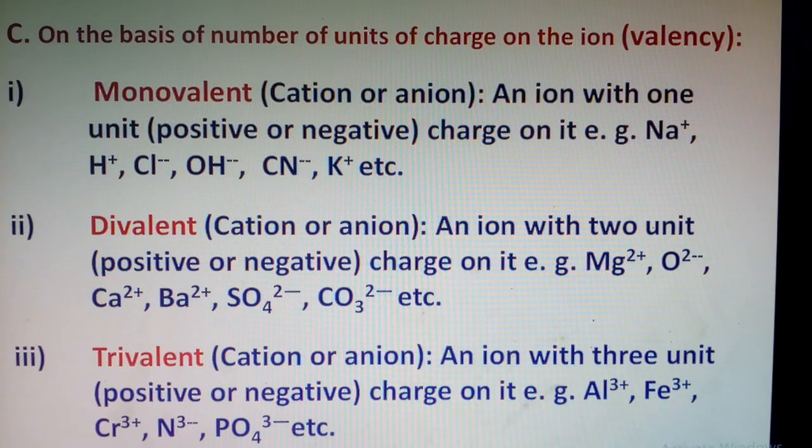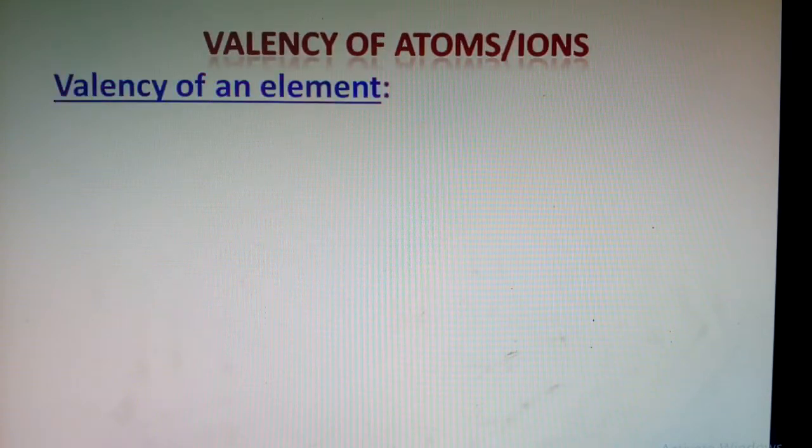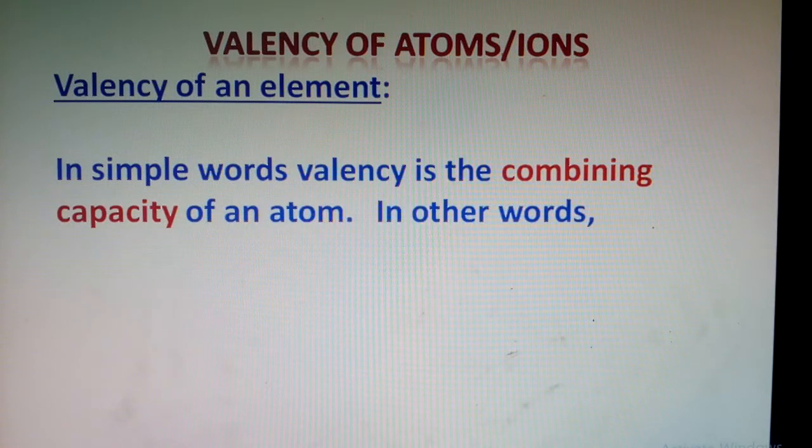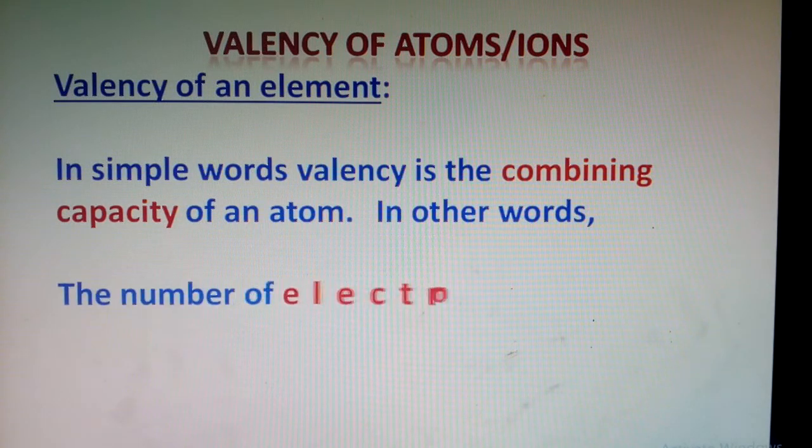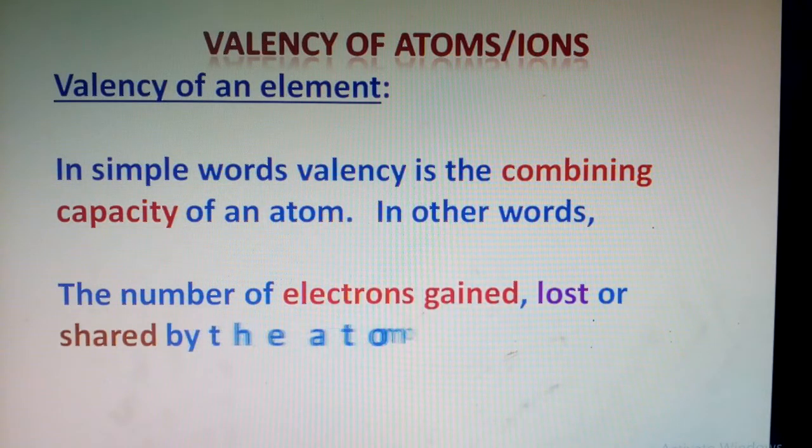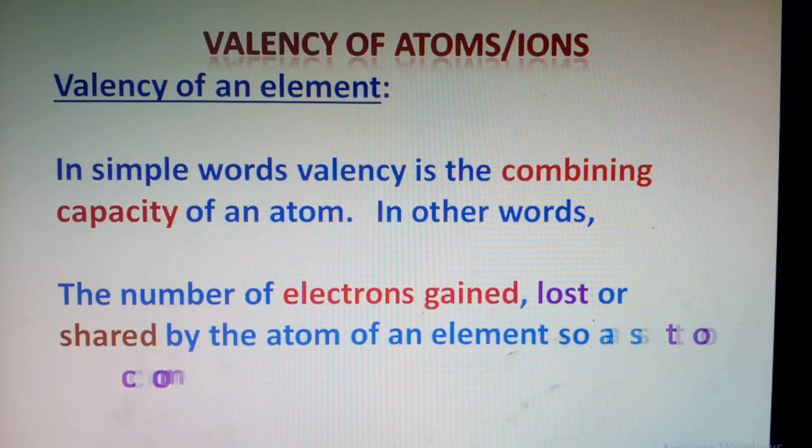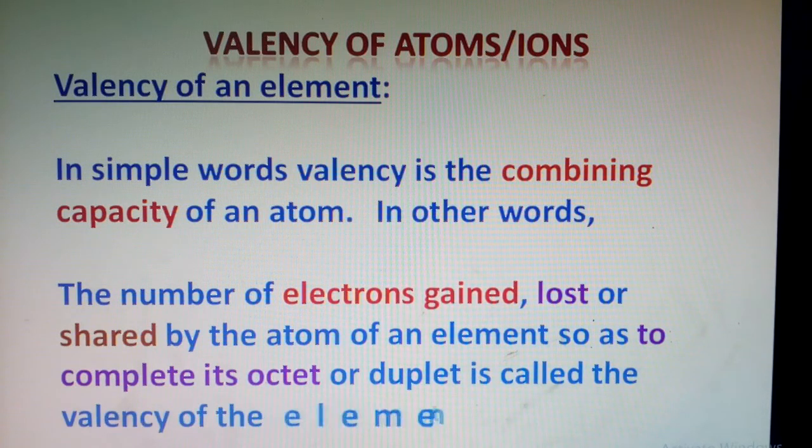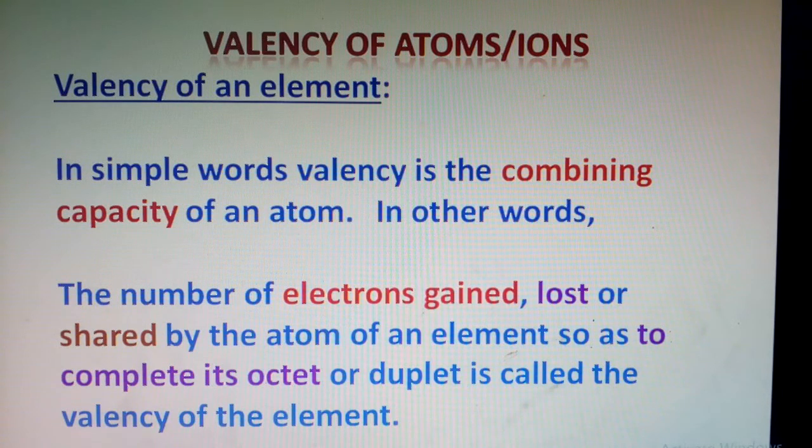Valency of atoms and ions: I already explained in the first part of the series that valency of an element is simply the combining capacity of an atom of that element. Or we can say the number of electrons gained, lost, or shared by the atom of an element to complete its octet or duplet is known as valency of that element.